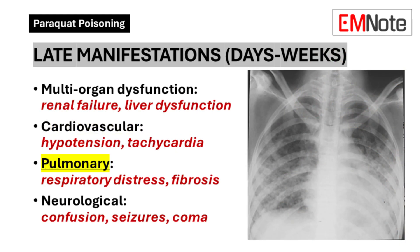The late phase, evolving over days to weeks, is characterized by progressive multi-organ dysfunction. This includes acute kidney injury, hepatocellular damage, cardiovascular instability manifesting as hypotension and tachycardia, progressive respiratory insufficiency due to evolving pulmonary fibrosis, and neurological sequelae ranging from confusion to seizures and obtundation.